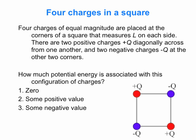Consider this scenario: we have a square, with a charge at each corner. All charges have the same magnitude. There are two positive charges on one diagonal and two negative charges on the other diagonal. How much potential energy is associated with this configuration? Could it be zero, some positive value, or some negative value?